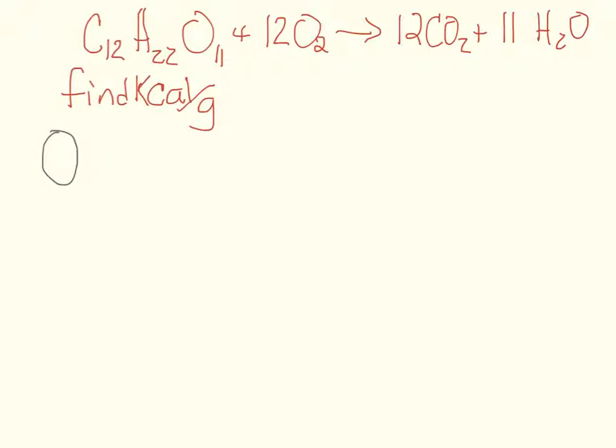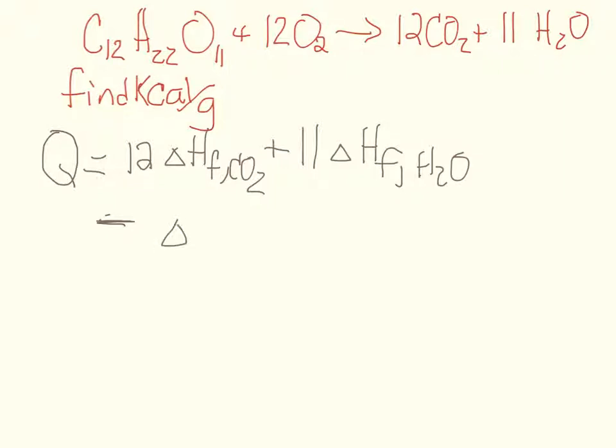So in order to find the energy liberated, I'm going to write our energy balance. Q equals the sum of the heats of, enthalpies of formation for the products. So the products, let's see, I've got 12 CO2, so I'm going to write delta HF of CO2, and then that's plus 11 times the delta HF of water. Okay, so notice, I just got these values from here, stoichiometric coefficients, and I've got to multiply them by my delta HF, which is something that I'm going to look up.